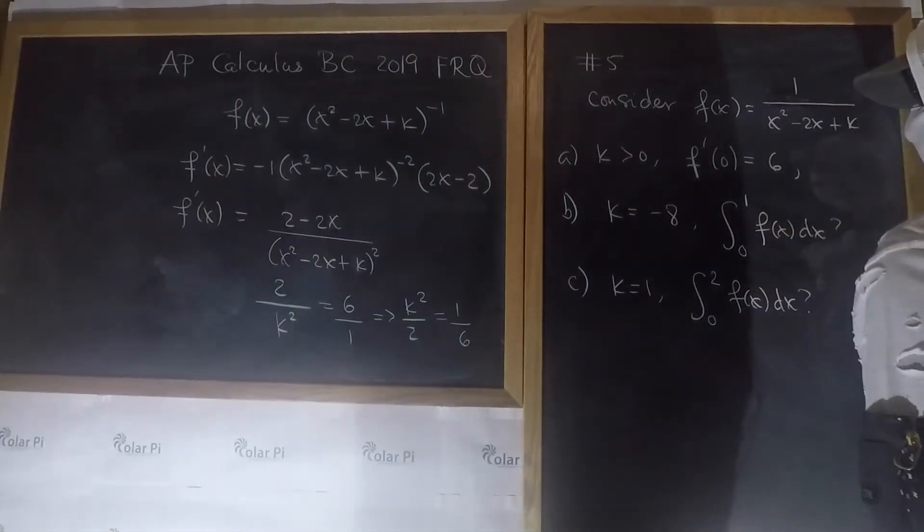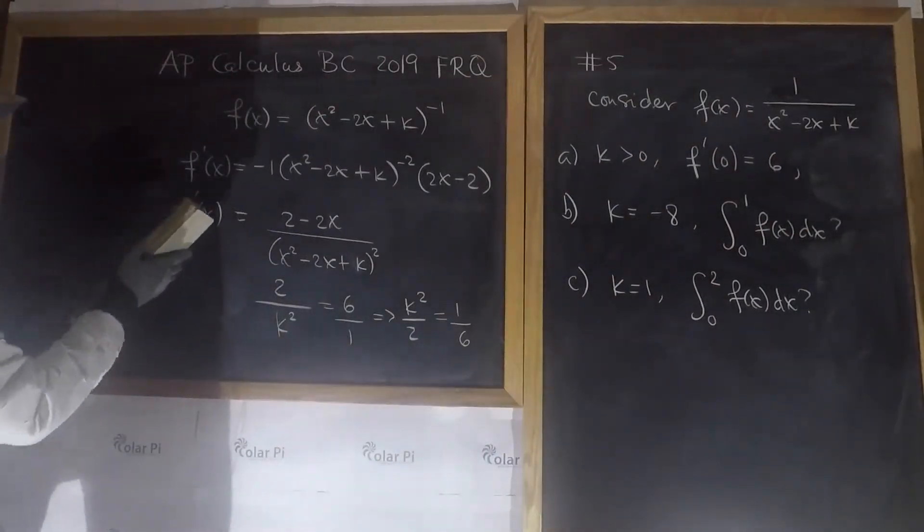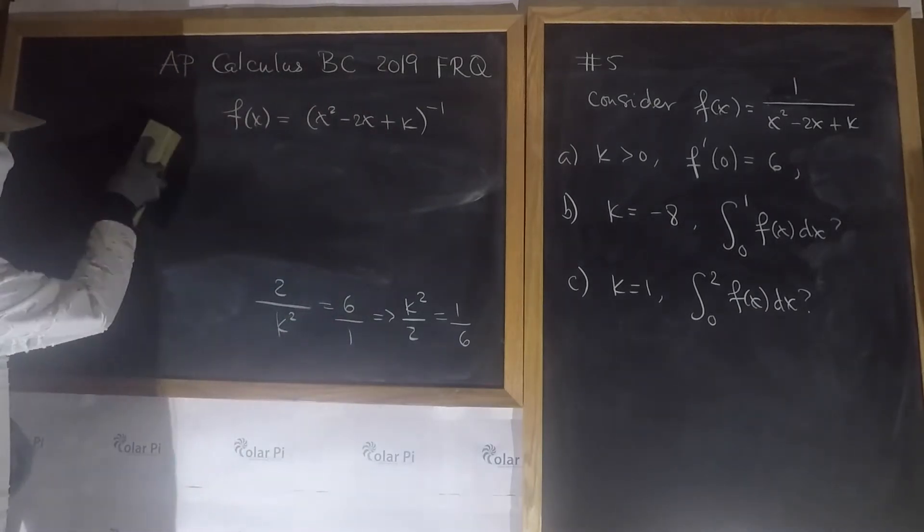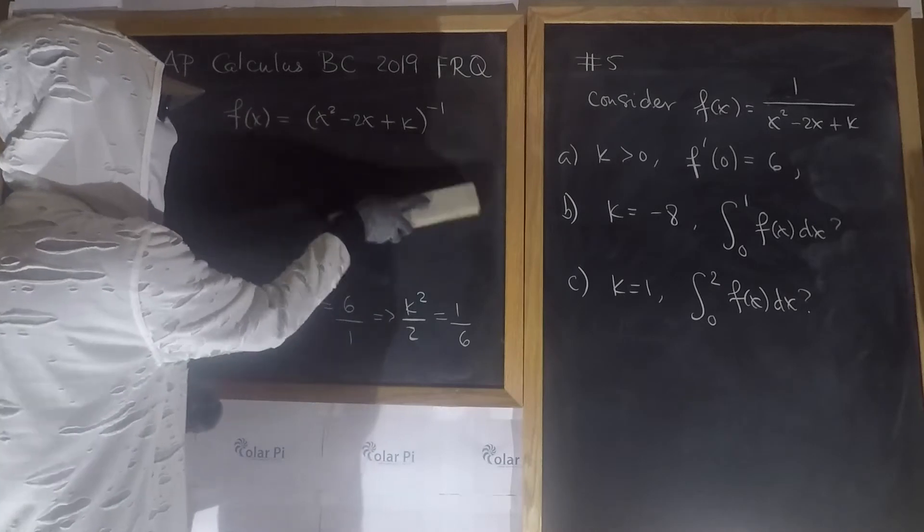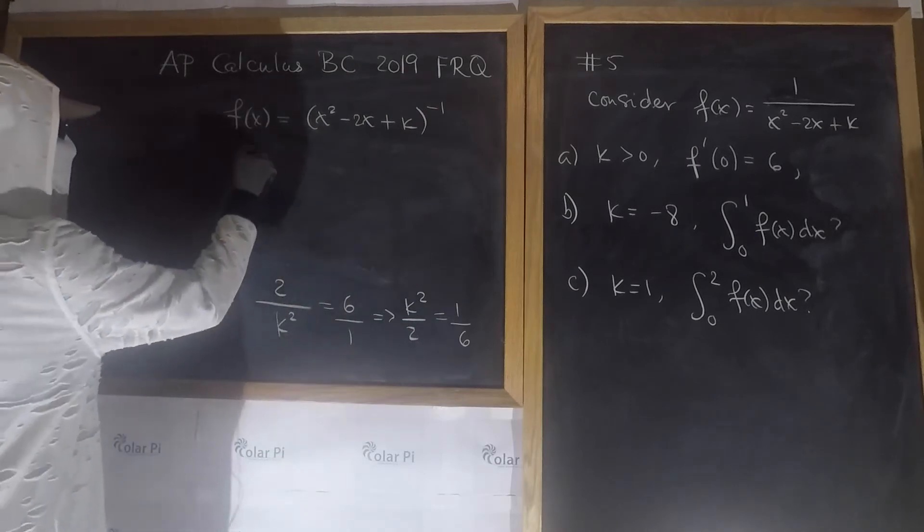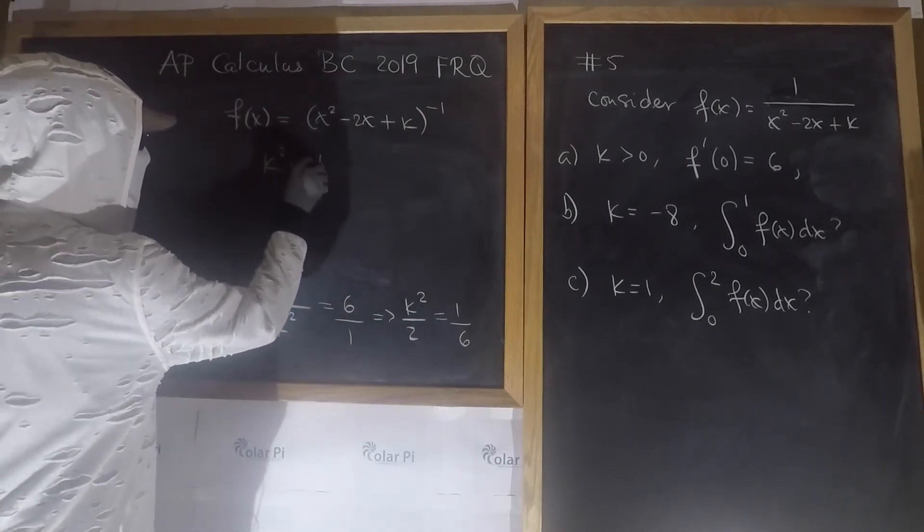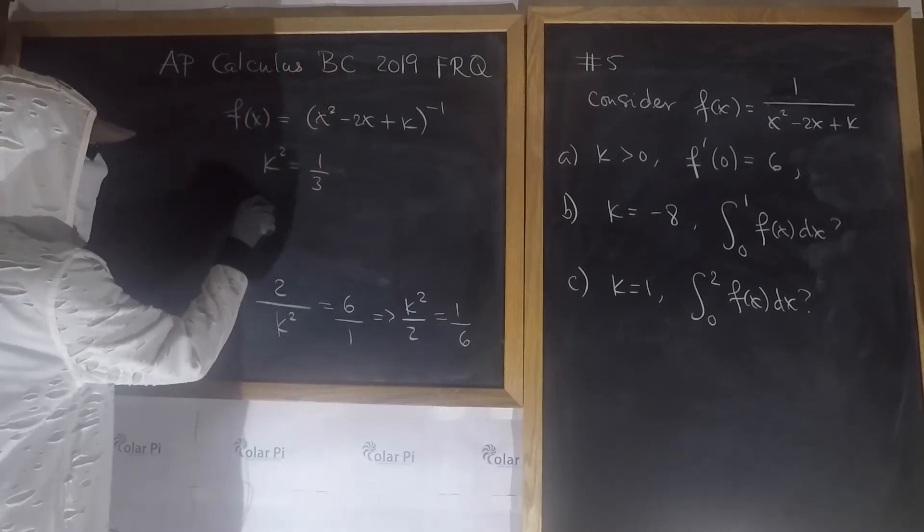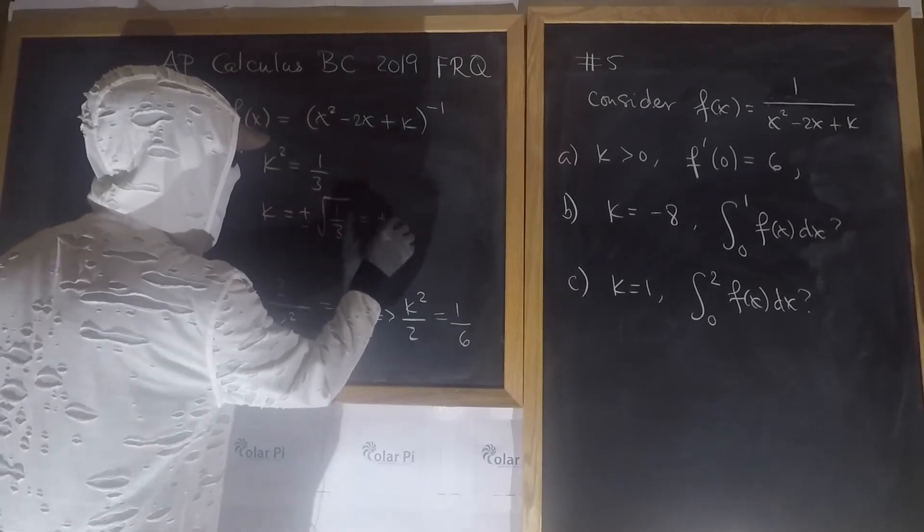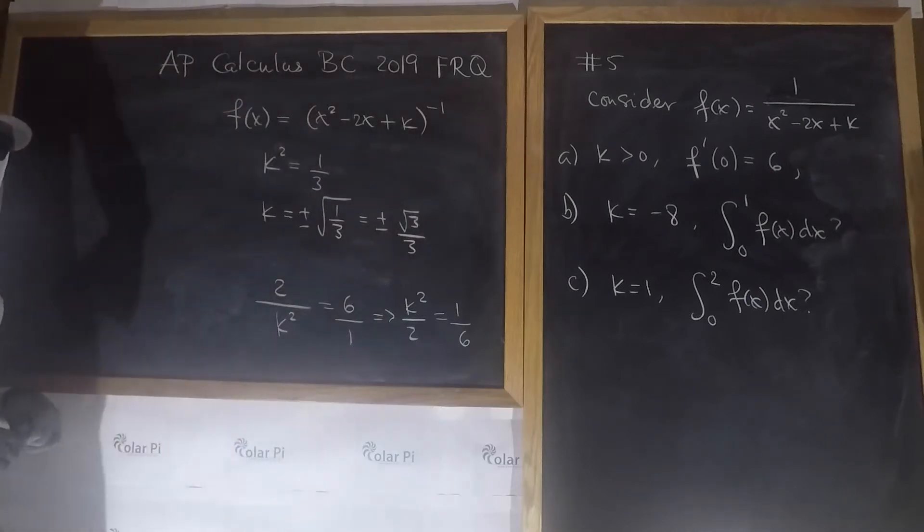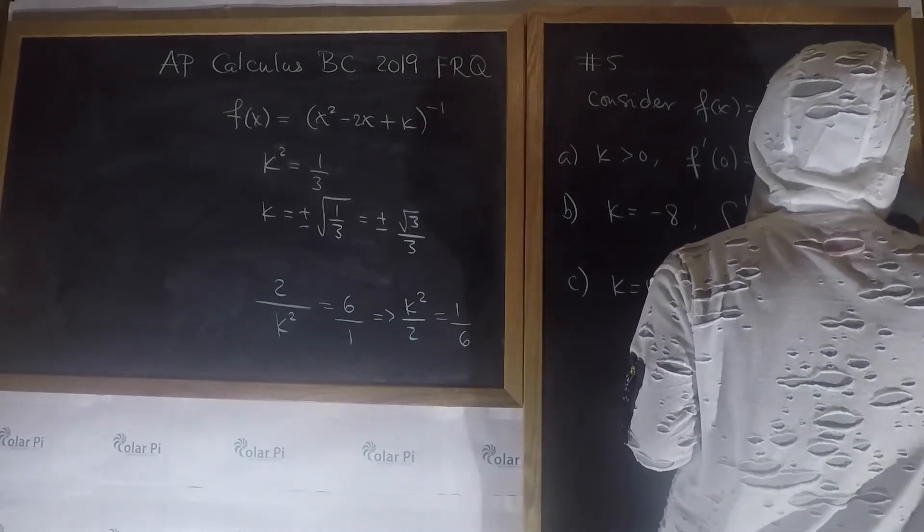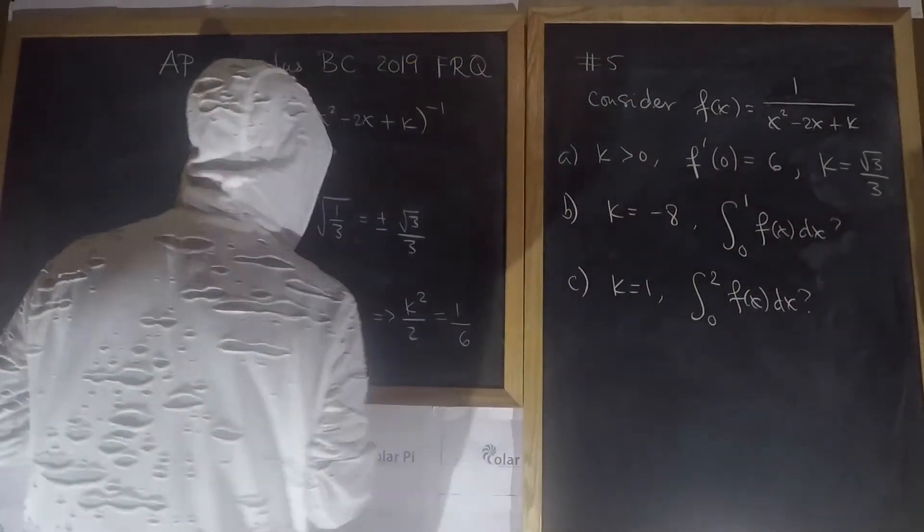Multiplying both sides of this by 2, we get that k squared is equal to 2 over 6, or a third. From which we gather that k has to be equal to plus or minus the square root of a third, which is plus or minus root 3 over 3. But since we're told that k is greater than 0, we pick positive root 3 over 3. So k equals positive root 3 over 3. That's it for A.